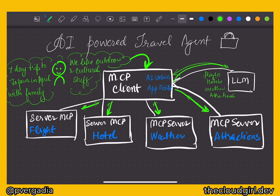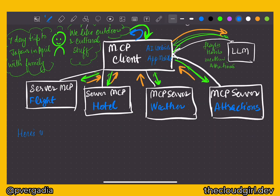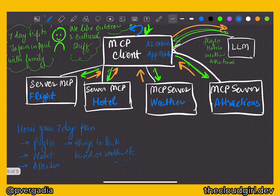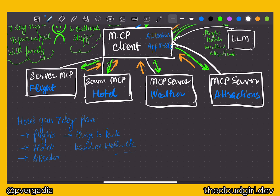The MCP client goes to the respective MCP servers for each piece of information and gets that data back to the LLM. The standardization is extremely helpful because the client knows exactly how to retrieve those details, package the information, and deliver the LLM's response back to the user. The response could include a seven-day plan with flight details, hotel reservation information, attraction details, and things to pack based on weather. You could also get confirmation from the user and proceed to make those bookings via the MCP clients.